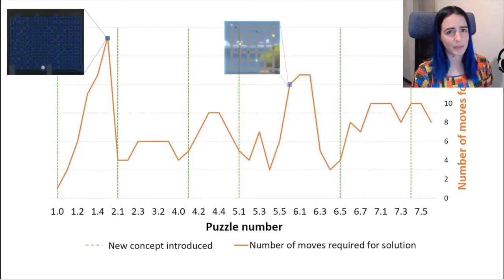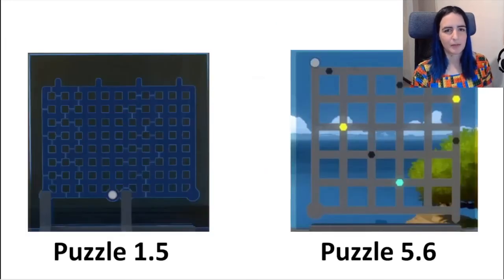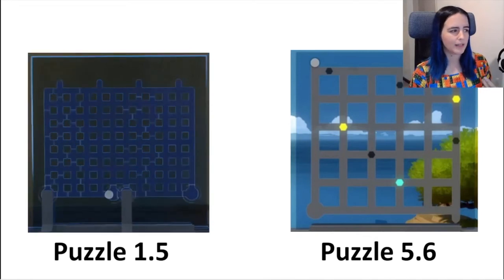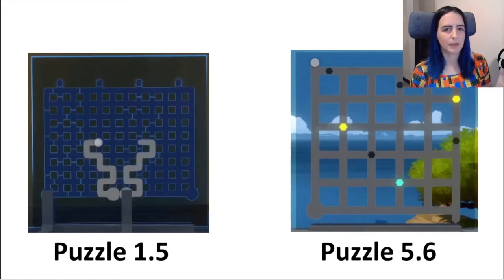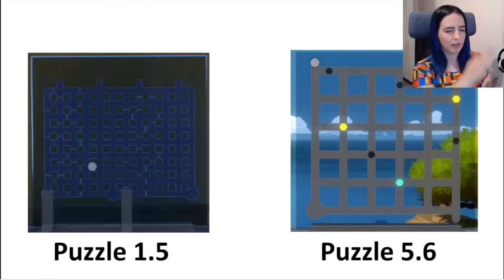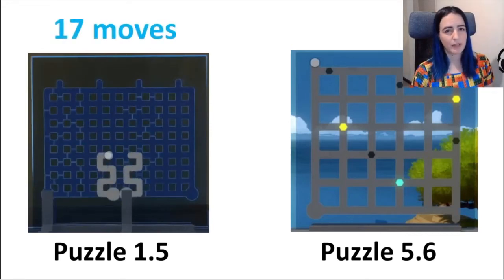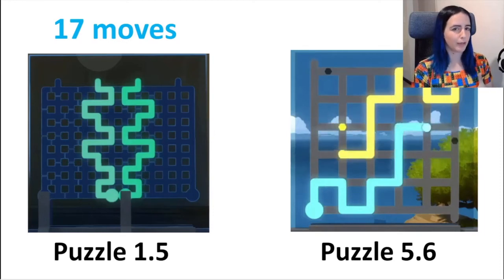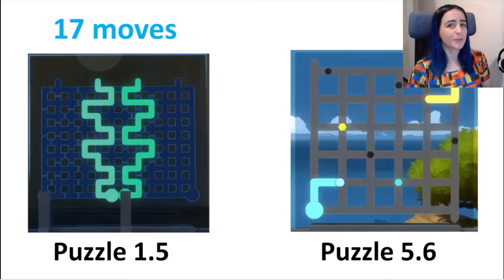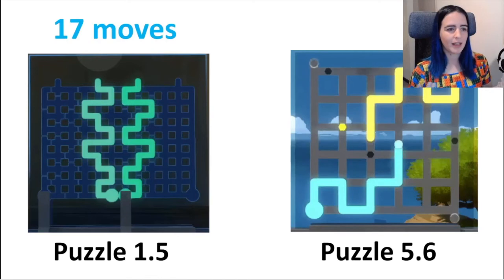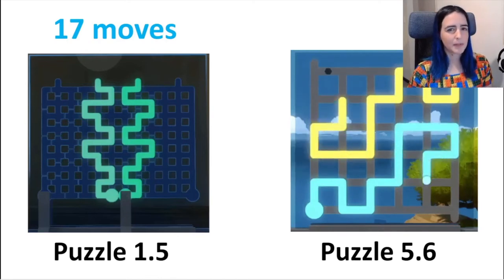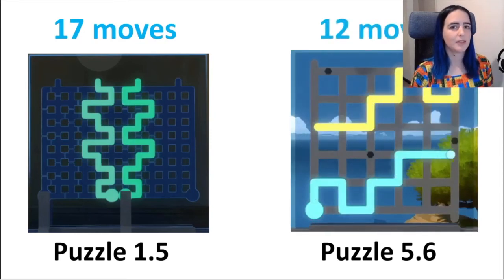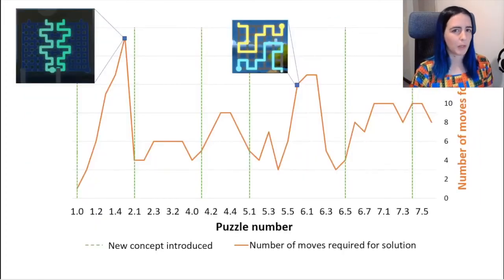Comparing two puzzles: puzzle 1.5 requires about 17 moves — a straightforward maze from start to finish avoiding blockages, taking into account a second reflected line, and takes about 10 seconds to solve. Puzzle 5.6 is more complicated: the yellow reflected line is reflected both vertically and horizontally, and lines must collect their respective colored hexagons while black hexagons can be collected by either line. This puzzle requires far more thought but is only 12 moves. So how could I represent difficulty using a different measure? The moves measure was not working for this game.